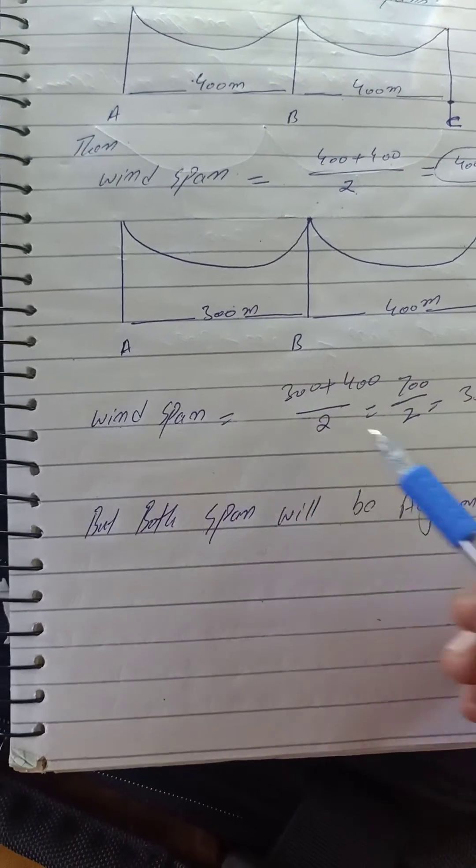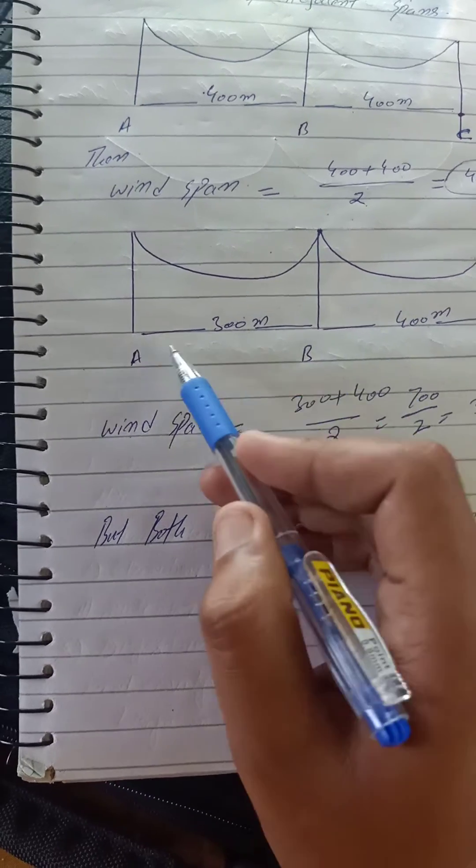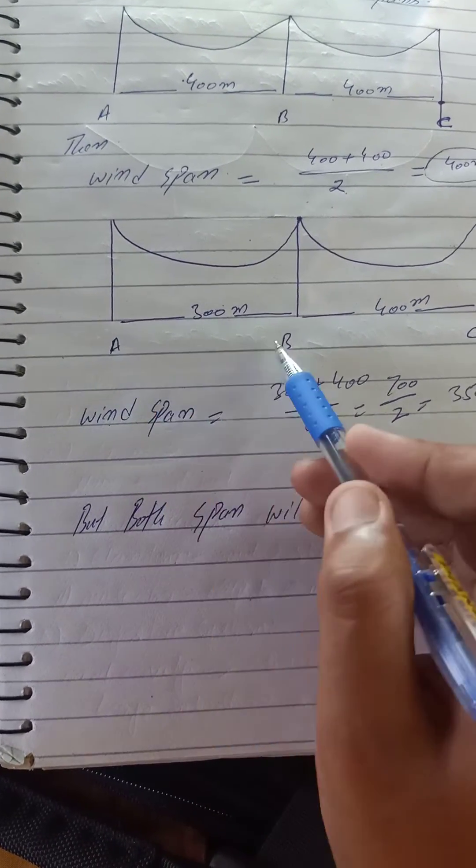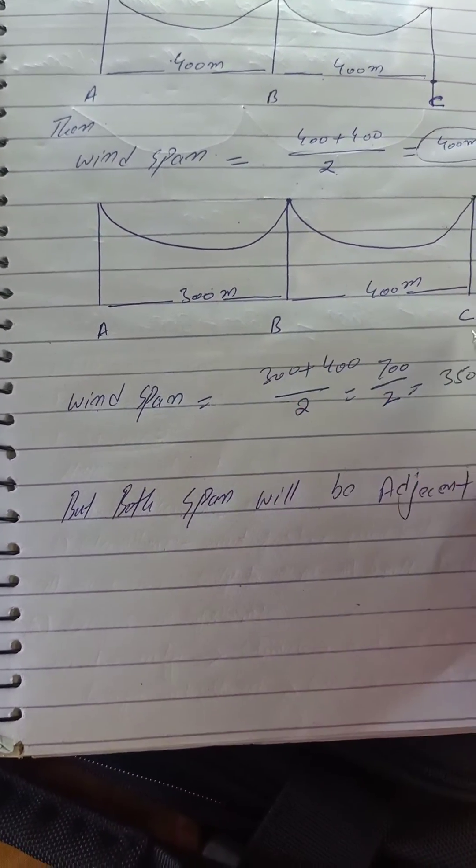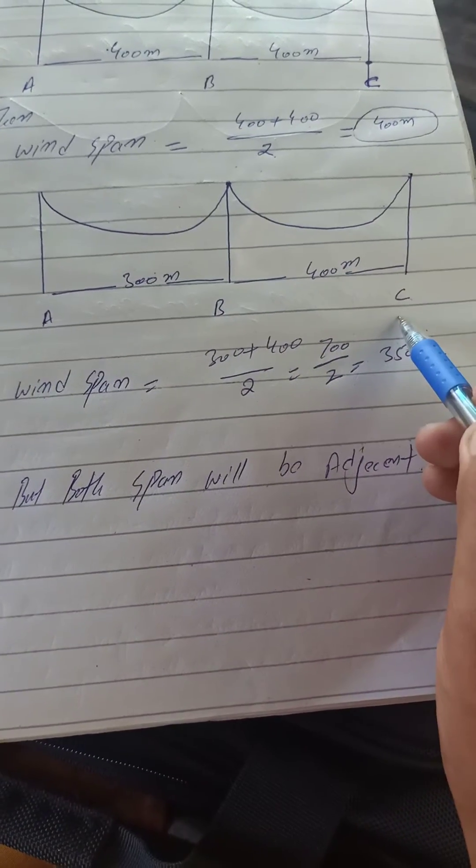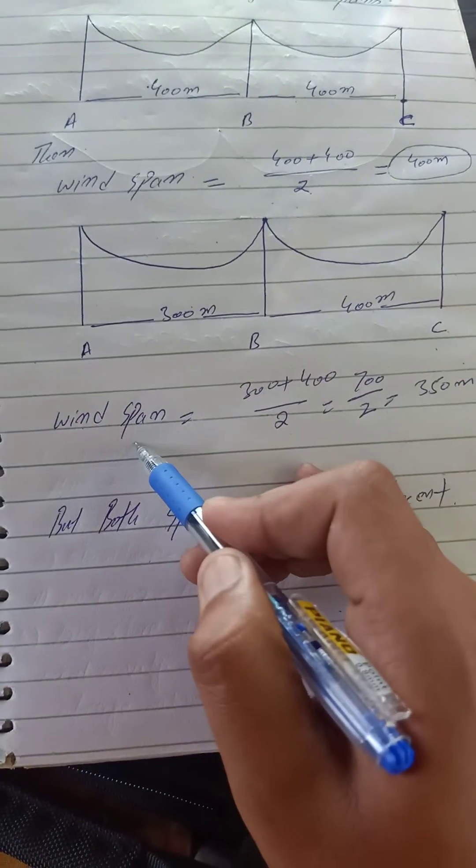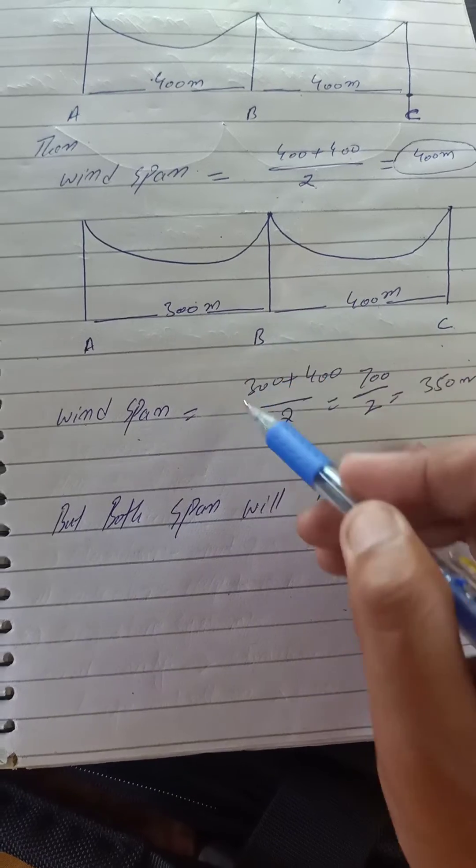In this case, the span between A and B is 300 meters, and the span between B and C is 400 meters. To get the wind span, it will be the sum of the two, and then we divide it by 2 to get the half of them.